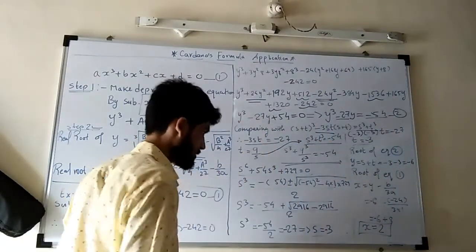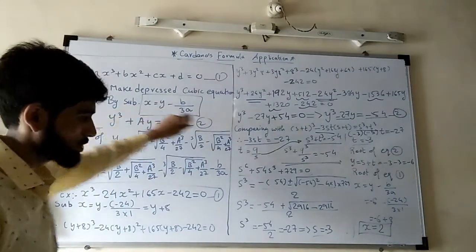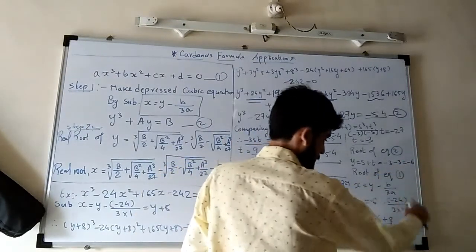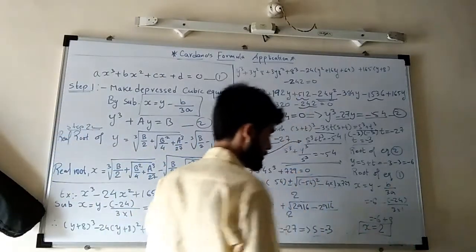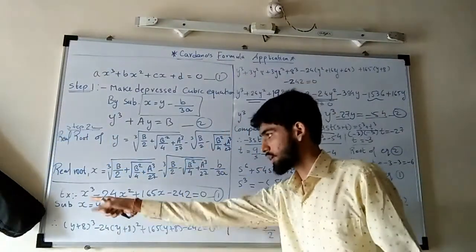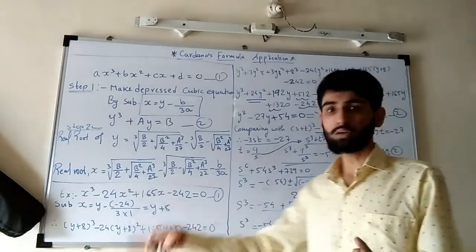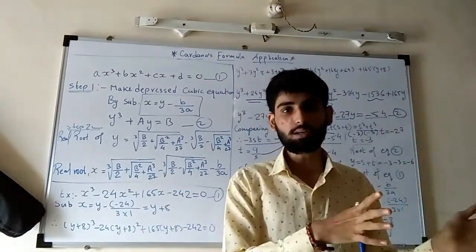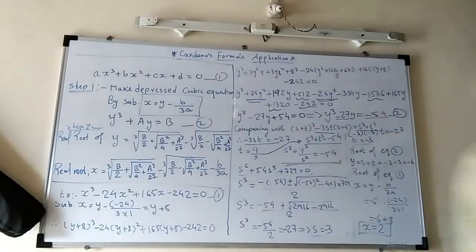So I got the root of the depressed cubic equation. Our aim was to find the root of equation number 1, our given equation. Substituting the value of y equal to minus 6 back into the substitution x equal to y plus 8, we get x equal to minus 2. You can check this — if we substitute x equal to 2 in the original equation, we get 0. So x equal to minus 2 is a real root. The other two roots can be found by factoring the cubic as (x minus 2) times some quadratic equation, and solving that quadratic. Thank you so much for watching this video.